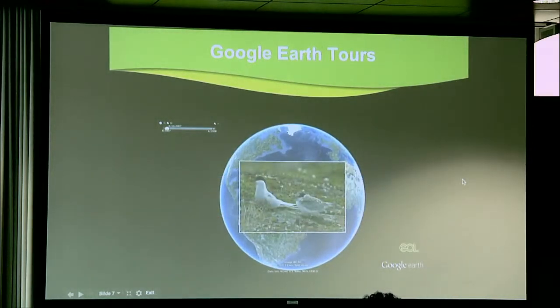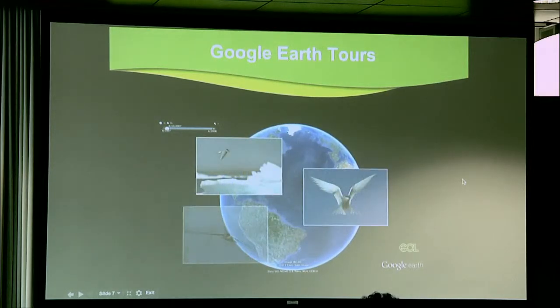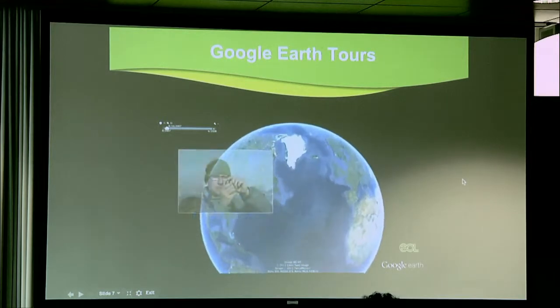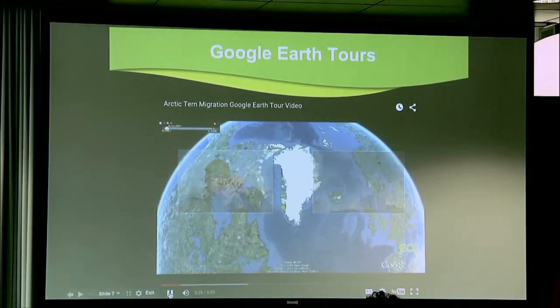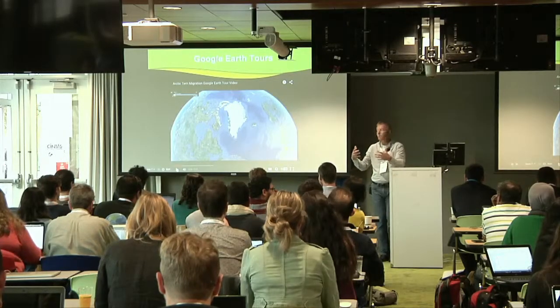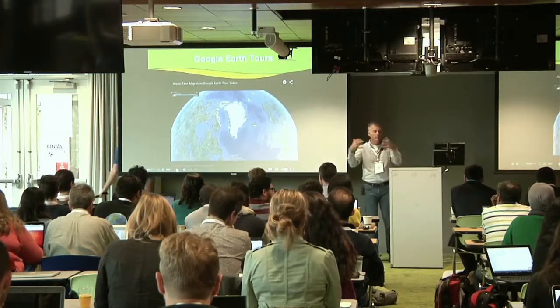Arctic terns have stubby legs, so they're clumsy on land. But in the sky, that's a different story. It's a very elegant bird in the air — really a bird made for life in the sky. And, says Karsten Egevang, a researcher at the Greenland Institute of Natural Resources, Arctic terns put that flying ability to good use. You can see this is a really nice way of bringing together audio, narrative, and the voice of the scientist who's working on this, within the context of where these things are happening on Earth.